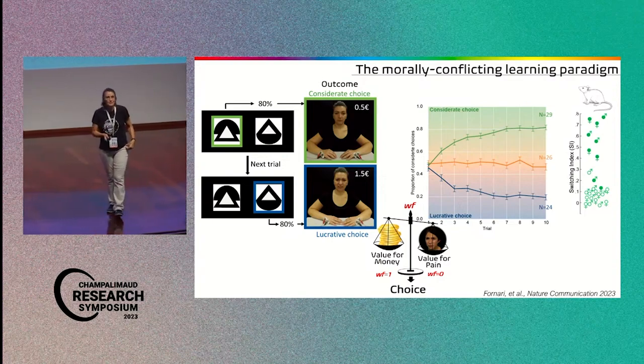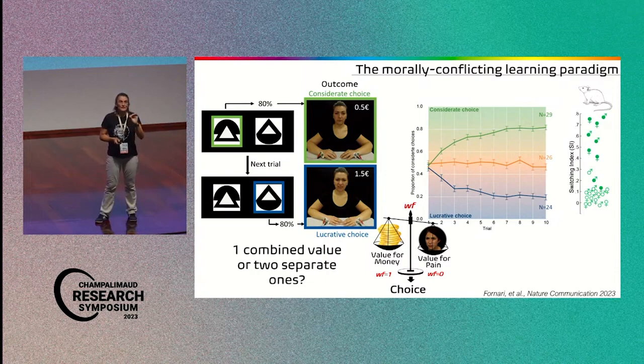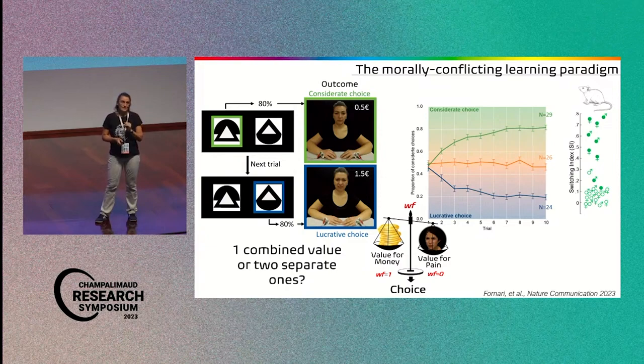And when we do that, we see that the winning model is a model that basically tells us that we do keep track of both the money for me and the pain of the other, independently of your preference. So you remain aware of what you are doing.